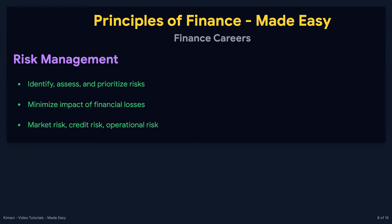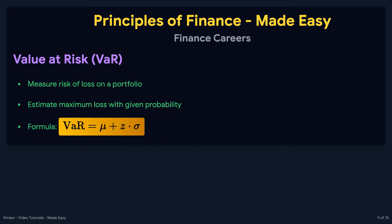Risk management involves identifying, assessing, and prioritizing risks to minimize the impact of financial losses. This can include market risk, credit risk, operational risk, and more. Value at Risk, or VaR, is a statistical technique used to measure the risk of loss on a portfolio. It estimates the maximum loss that can occur with a given probability over a specified time period. The formula for VaR is: VaR equals the expected return plus the Z score corresponding to the confidence level, multiplied by the standard deviation of returns.